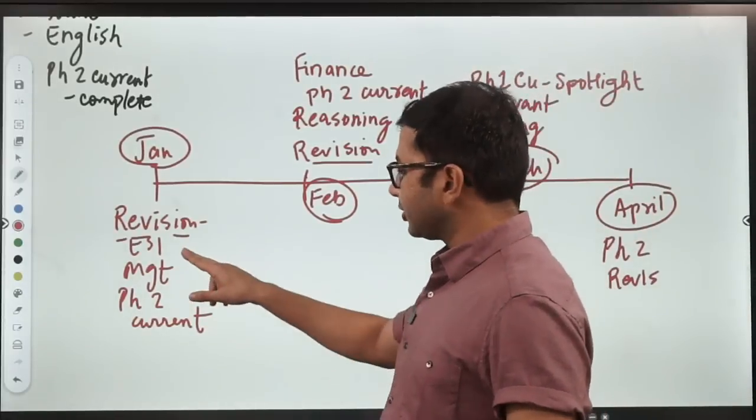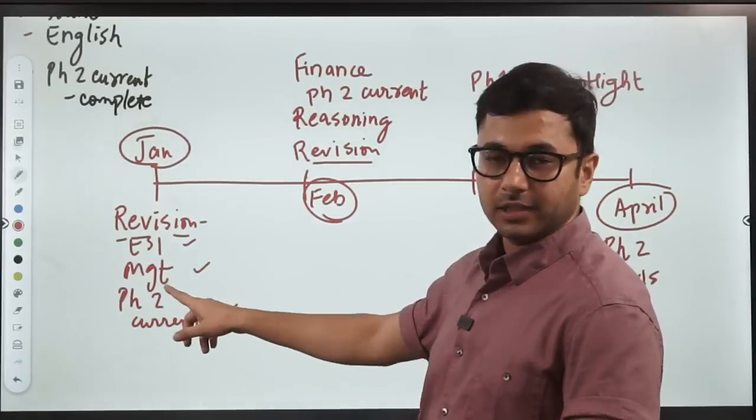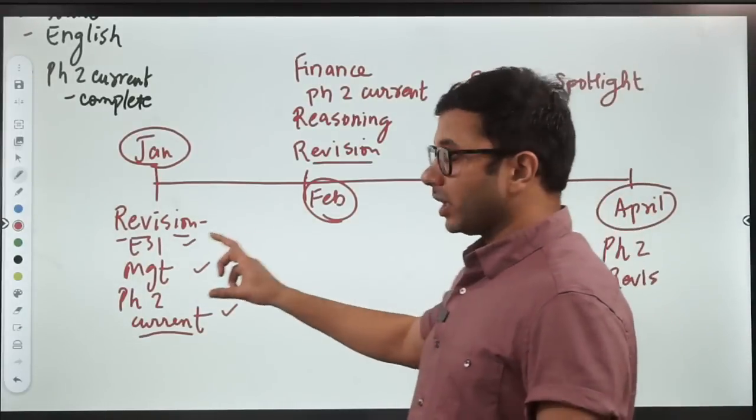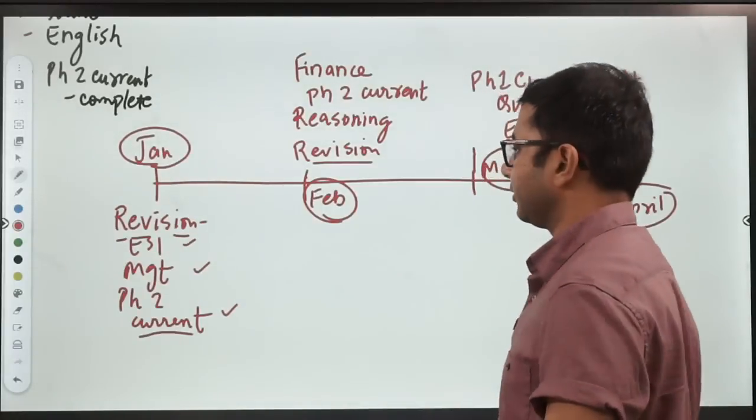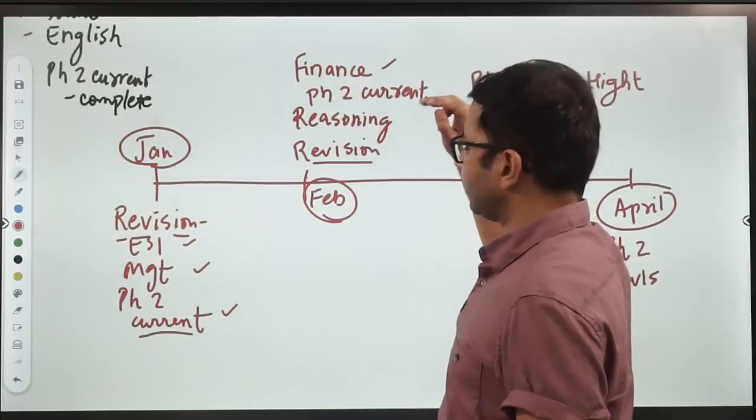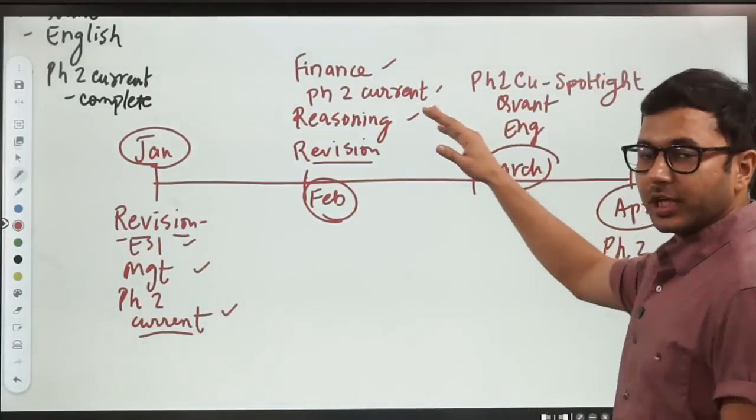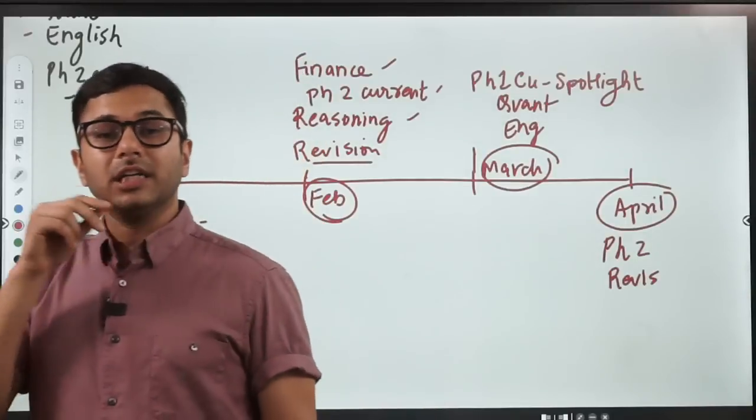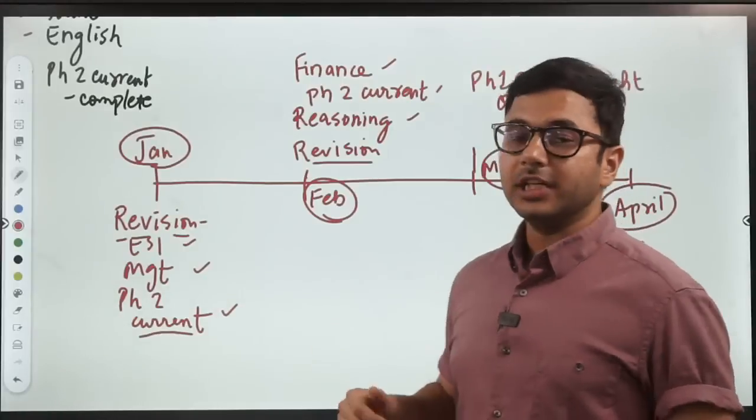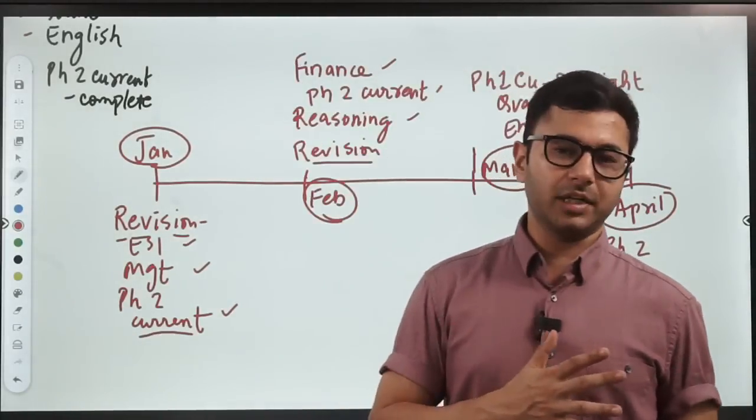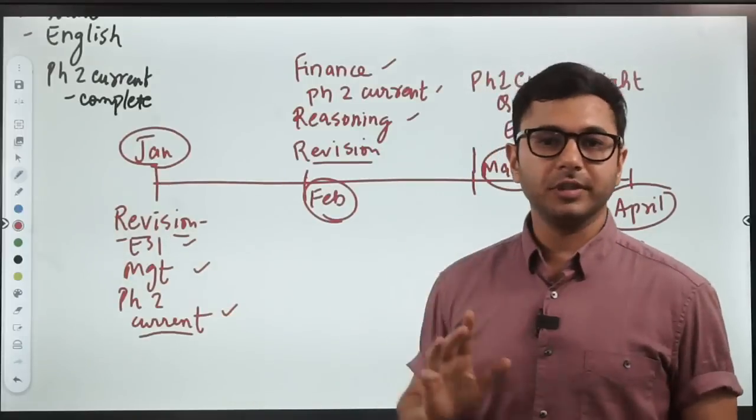In January you start with the revision of ESI and management, same cycle repeat, and phase two current which you are going to complete or revise again. You revise ESI, management and you cover or revise phase two current affairs. In February you start revision of finance, you start revision of reasoning, and then you continue with phase two current. I'm keeping phase two current so long because number one, its weightage in phase two is maximum, and number two because two months before exam your focus will shift to phase one. Because of this I want that three to four months before the exam we are very thoroughly prepared with phase two current affairs because it is going to be useful in phase one plus phase two. It is one of the most important parts.